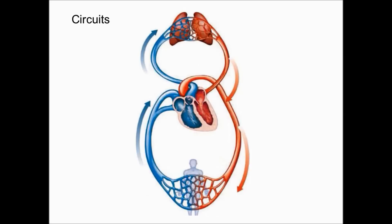In the human body, a circuit is a closed loop that starts and finishes at the same place, and there are two circuits of the cardiovascular system. The first circuit is between the heart and the lungs, and this is called the pulmonary circuit. The second circuit is between the heart and the body, and we call this the systemic circuit.